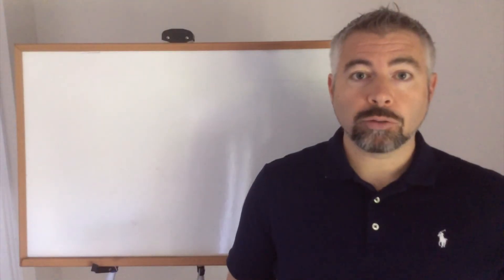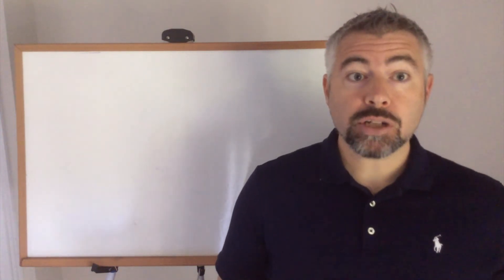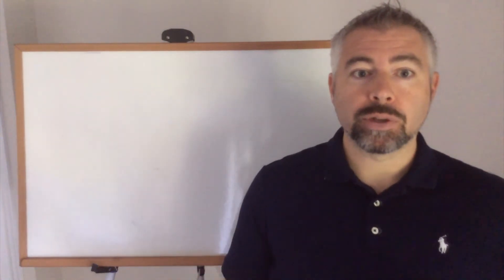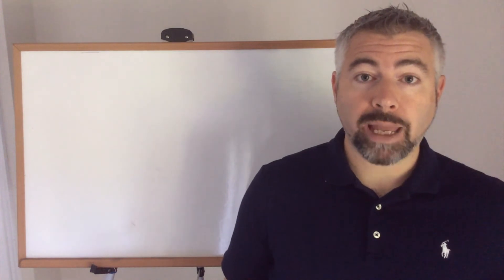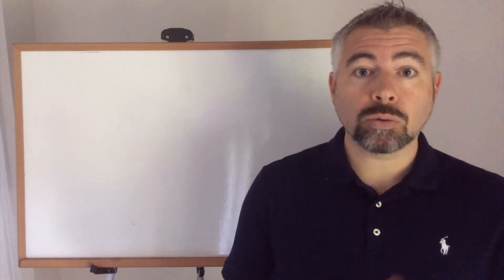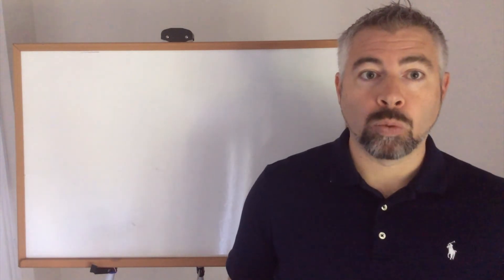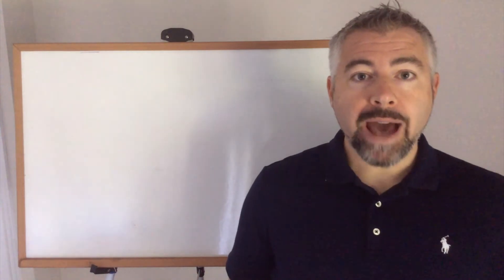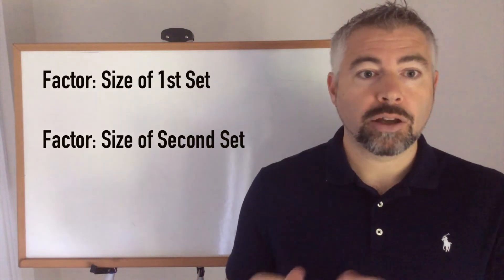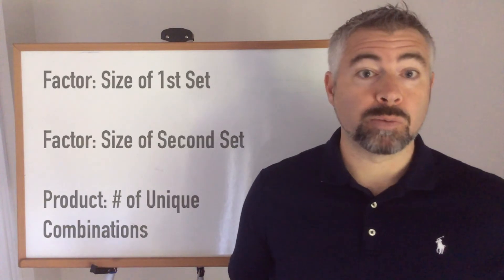The fifth and final meaning of multiplication is what's called a Cartesian product. A Cartesian product is what we get when we pair objects from two different sets. For example, if I had three pairs of pants and three shirts, the product would be the total number of combinations I could create with one pair of pants and one shirt. The factors in the Cartesian product are the size of each group: three pants, three shirts, and the product is the total number of combinations, in this case nine.